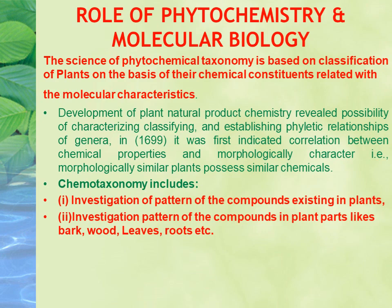Now we move to phytochemistry and how it helps in taxonomy. Phytochemistry is the study of chemicals present in plants. Closely related plants in the same family will have similar chemicals, and many chemicals are shared across the whole family. So if a new plant is analyzed and you find certain compounds, you can decide which family it belongs to. We analyze all parts of the plant — wood, leaves, roots — and identify the chemical compounds.